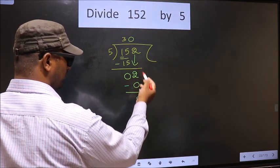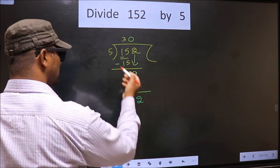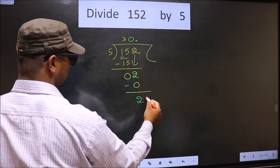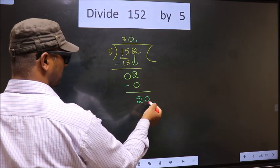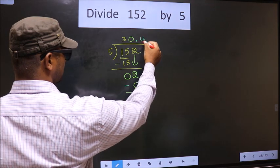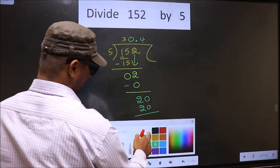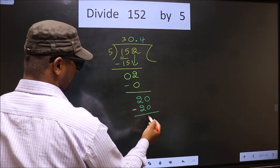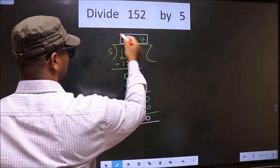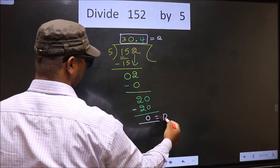Now here we did not bring any number down, and 2 is smaller than 5. So we can put a decimal point and write 0 here. Now here we have 20. When do we get 20 in the 5 table? 5 times 4 equals 20. Now you subtract: 20 minus 20 is 0. So this is our quotient, and this is our remainder.